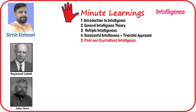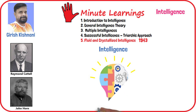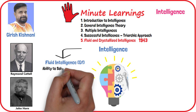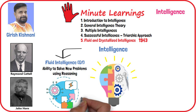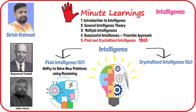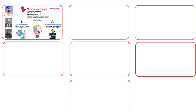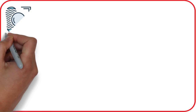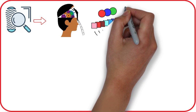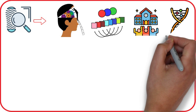Psychologist Raymond B. Cattell, along with his student John Horn, first introduced this theory in 1943. The theory is based on the idea that intelligence is a combination of two types of abilities that work together throughout a person's life: fluid intelligence (GF), the ability to solve new problems using reasoning, related to skills like comprehension, problem-solving, and learning; and crystallized intelligence (GC), the ability to use previously learned knowledge to solve problems, based on knowledge gained through experience. Cattell's theory drew on evidence from developmental and factor analytic studies, as well as school achievement and biological and genetic evidence.